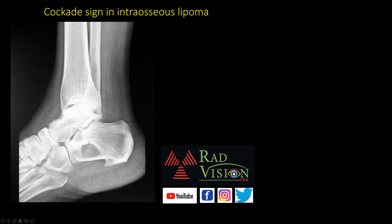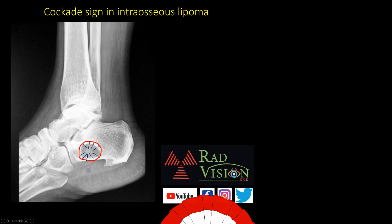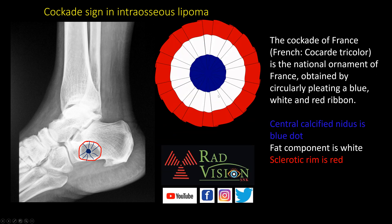The last case: a hypointense lesion surrounded by a thick sclerotic rim with a central hyperintense nidus in the calcaneum — typical of an intraosseous lipoma. This resembles a cockade. In the cockade sign of intraosseous lipoma, the central calcified nidus is the blue dot, the fat component is the white component, and the sclerotic rim is the red component. The cockade is a French national ornament worn on hats or dresses, made by pleating a blue, white, and red ribbon. Remember the cockade sign for intraosseous lipoma.